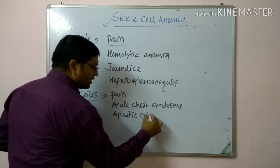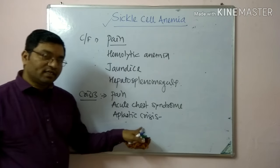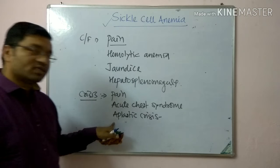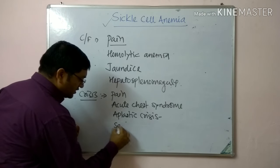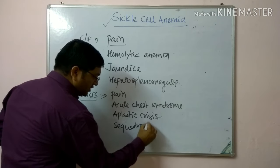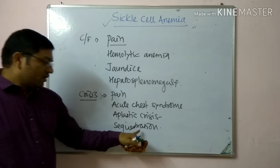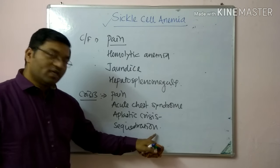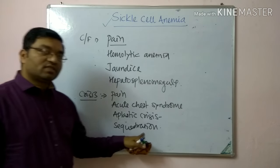The second crisis is the aplastic crisis, caused by infection with parvovirus B19. The third is the sequestration crisis, which is due to pooling of blood in the spleen, resulting in a rapid lowering of hemoglobin levels.